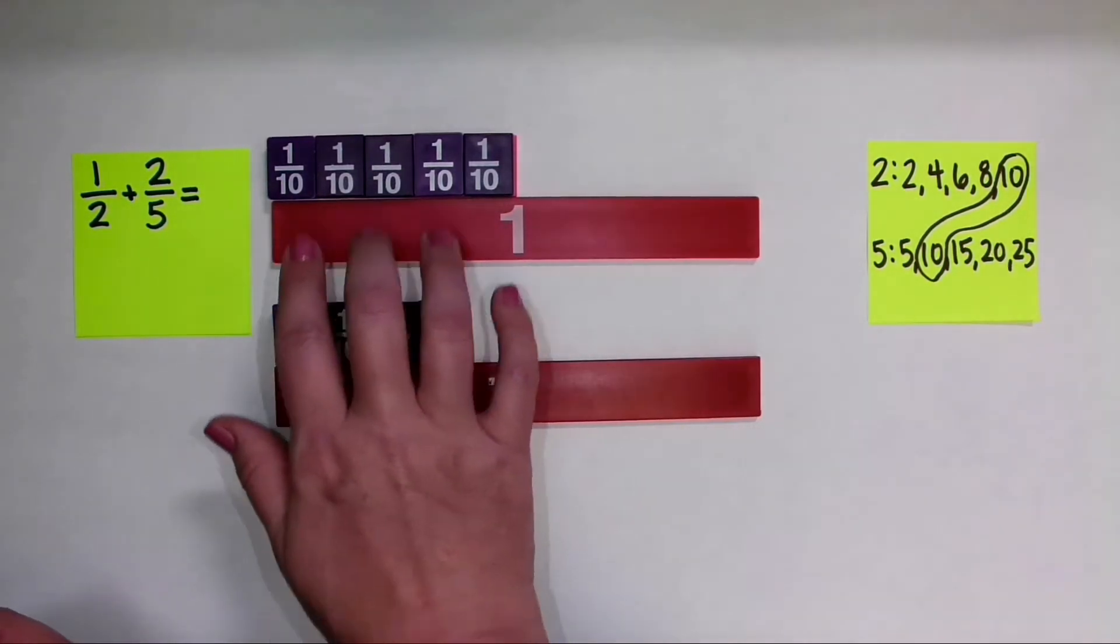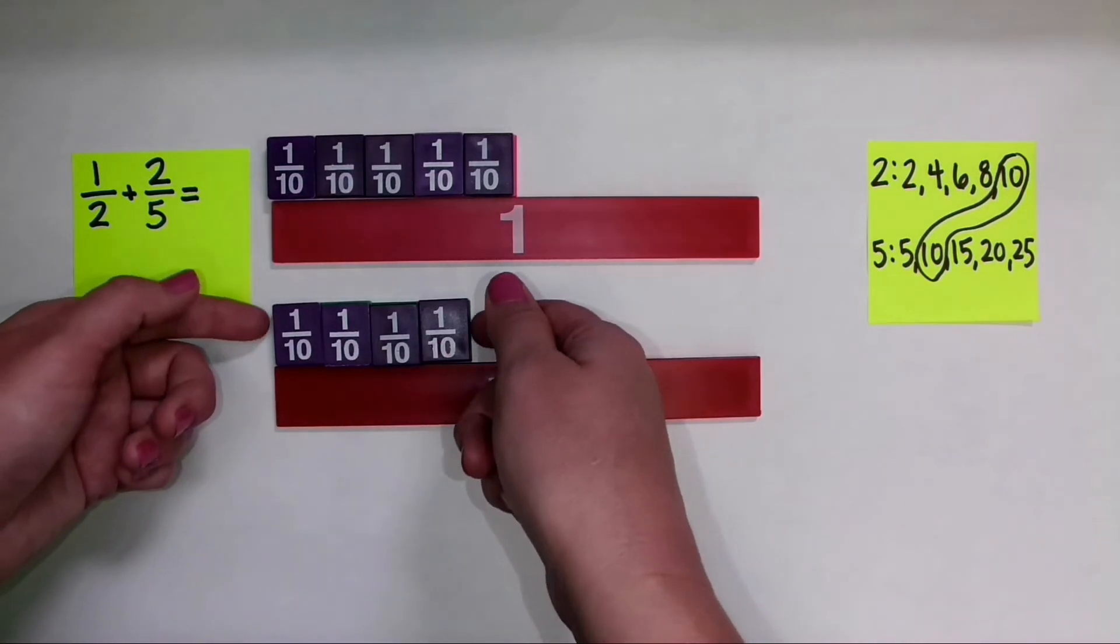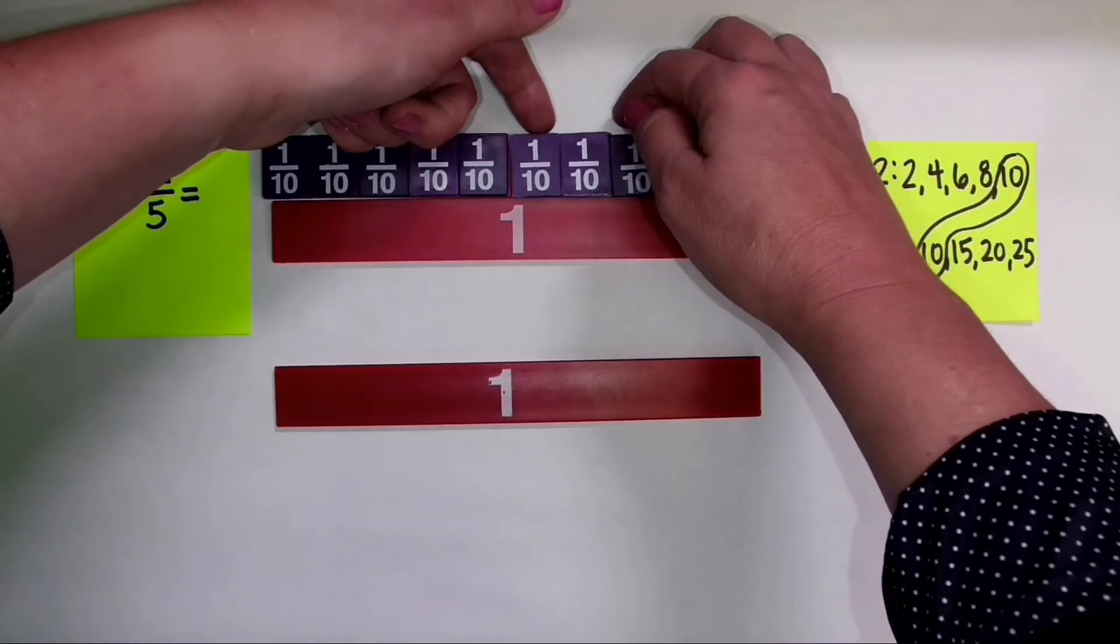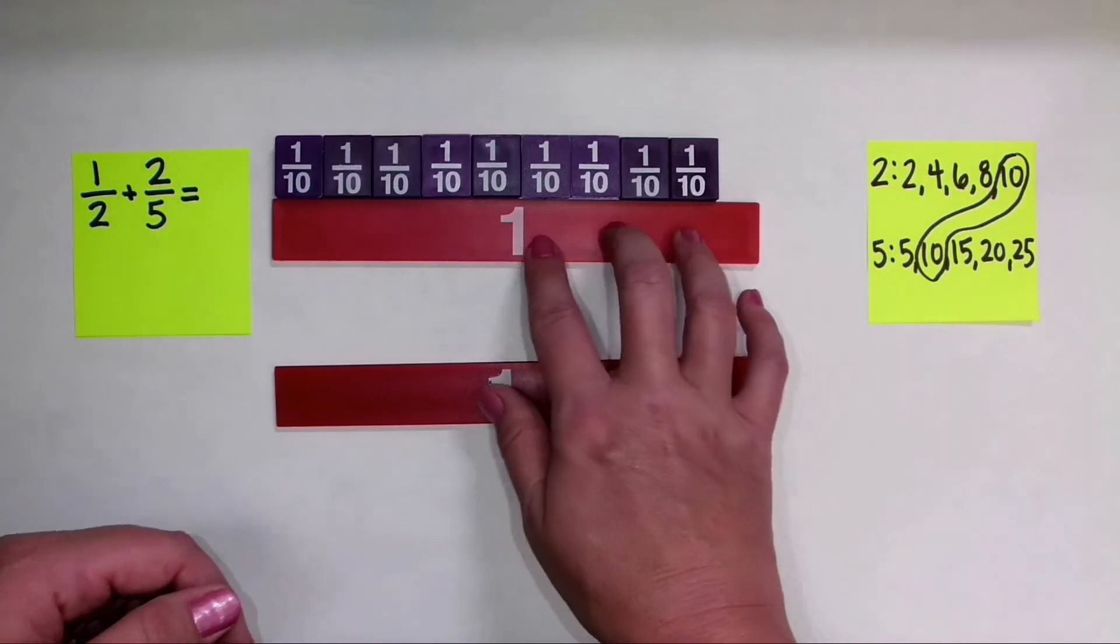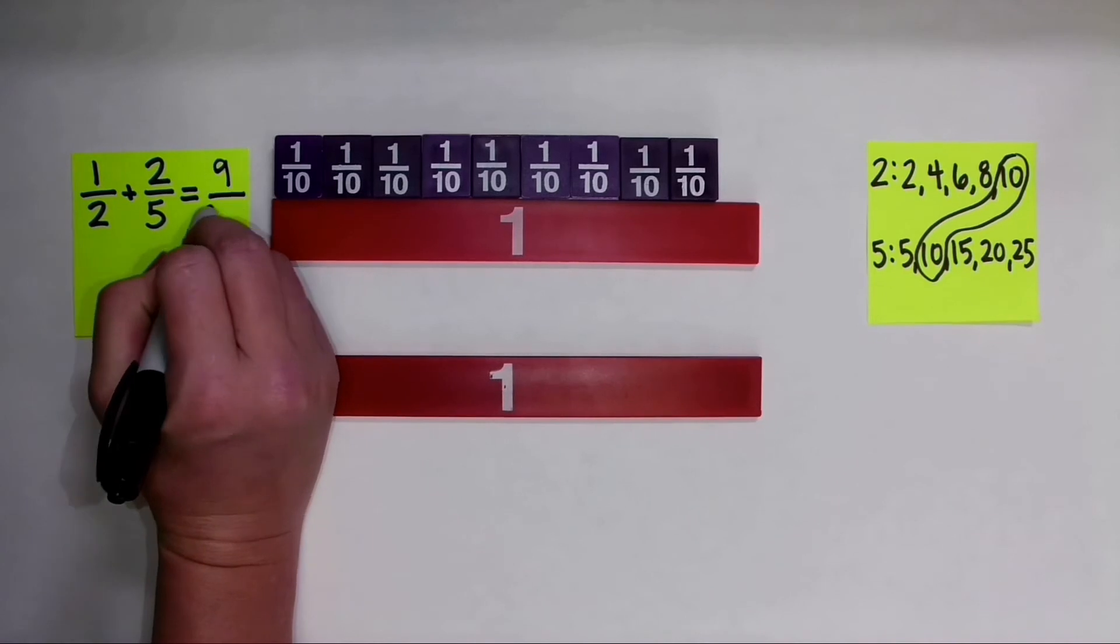Now I have 5 tenths, and to it I'm going to add 4 tenths. So I'm just going to move my tenths up here to show the action of adding. So when I have 5 tenths and I add 4 tenths, my answer is 9 tenths. So I'll go ahead and write that right here.